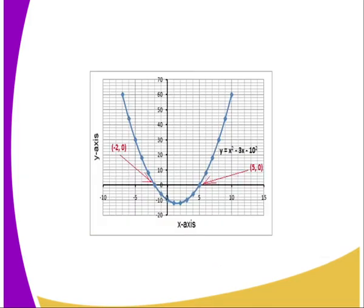After plotting the points that you can see on the board, we join them using a smooth curve. Now, what is the solution to our equation? Remember, the equation equals zero, so we find where the graph cuts the x-axis. The graph cuts the x-axis at point (5, 0), so the first value of x equals 5. It also cuts at (negative 2, 0), so the second value of x is negative 2. That is how you solve the quadratic equation graphically.